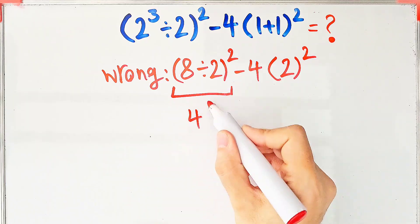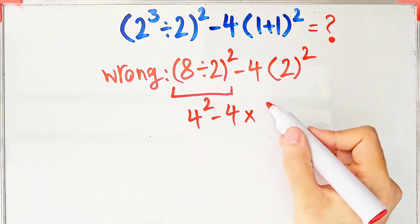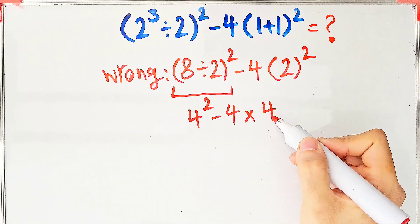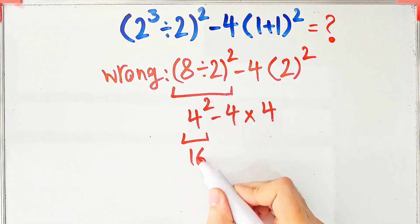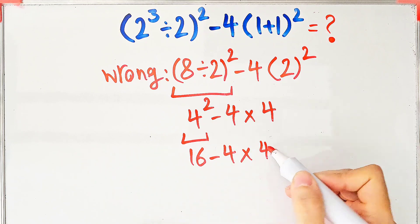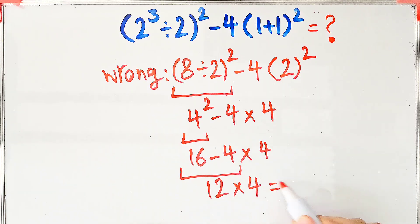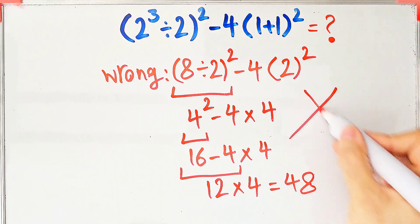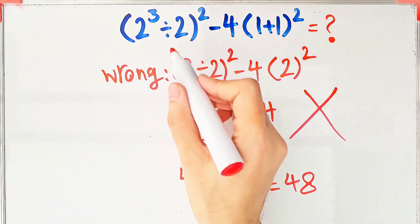Four to the power of two, minus four, then times four. Four to the power of two equals sixteen. Sixteen minus four equals twelve, and twelve times four equals forty-eight. They say the final answer equals forty-eight, but this answer is definitely wrong.